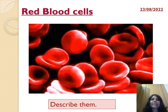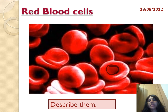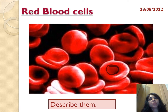Red blood cells are red in color because of their hemoglobin. If you look at them, they are flat disc-like structures — hollow in shape — and they don't have a nucleus. This gives them a large surface area, and their role is to bind with oxygen and transfer it around the body.